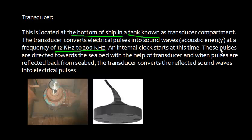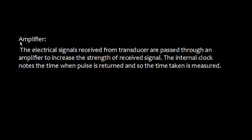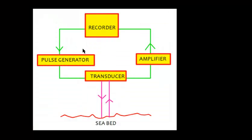The transducer produces acoustic waves at a frequency of 12 kilohertz to 200 kilohertz. An internal clock starts at this time and these pulses are directed towards the seabed with the help of the transducer. When pulses are reflected back from the seabed, the transducer converts the reflected sound waves into electrical pulses. The electrical signals received from the transducer are passed through an amplifier to increase the strength of the received signal. The internal clock notes the time when the pulse is returned, so the time taken is measured.